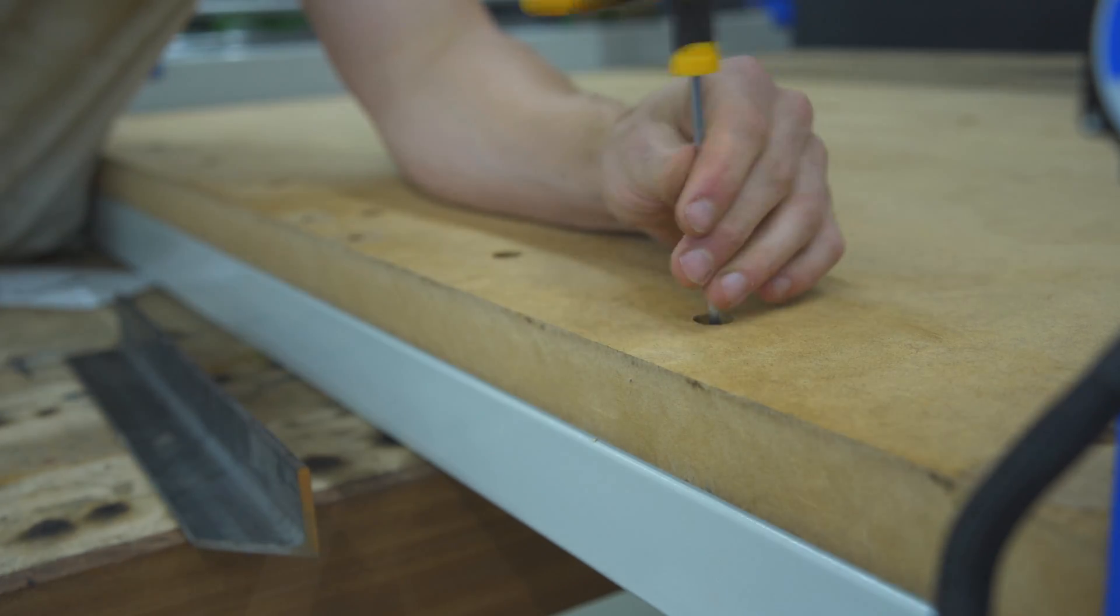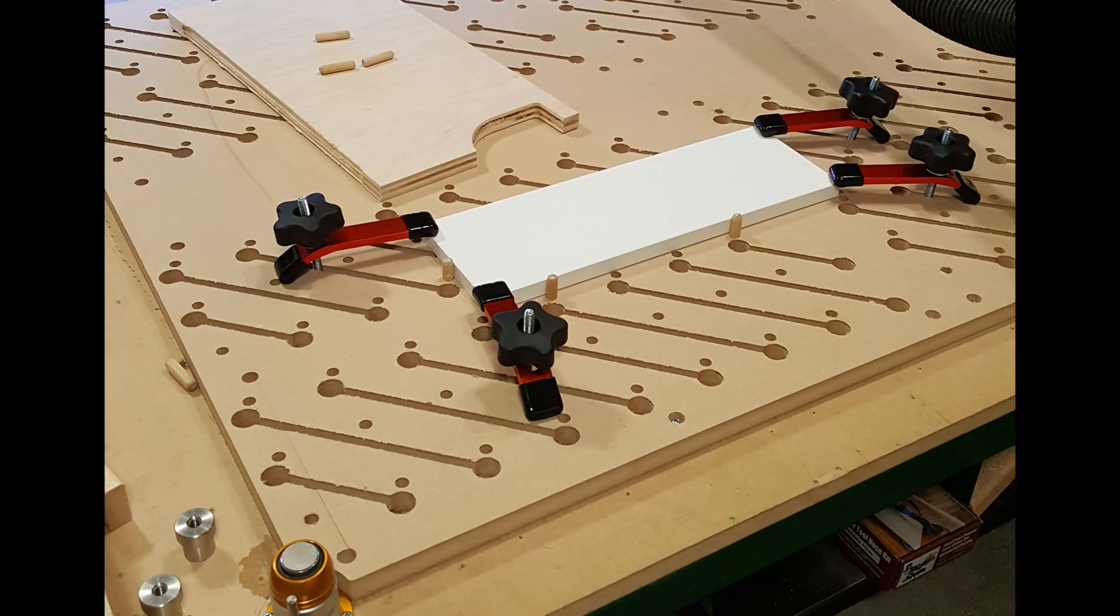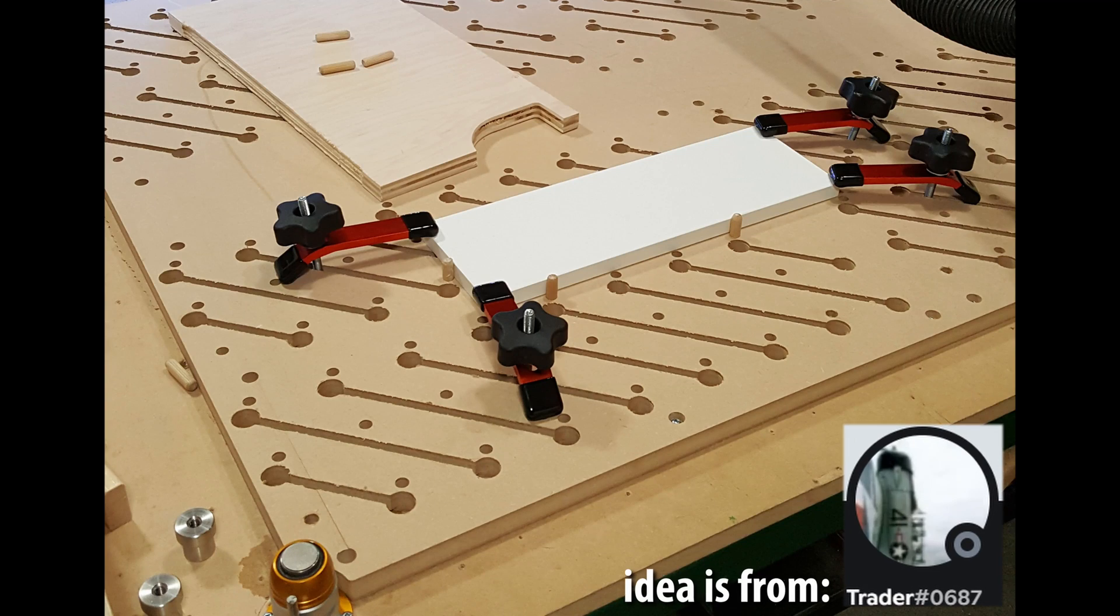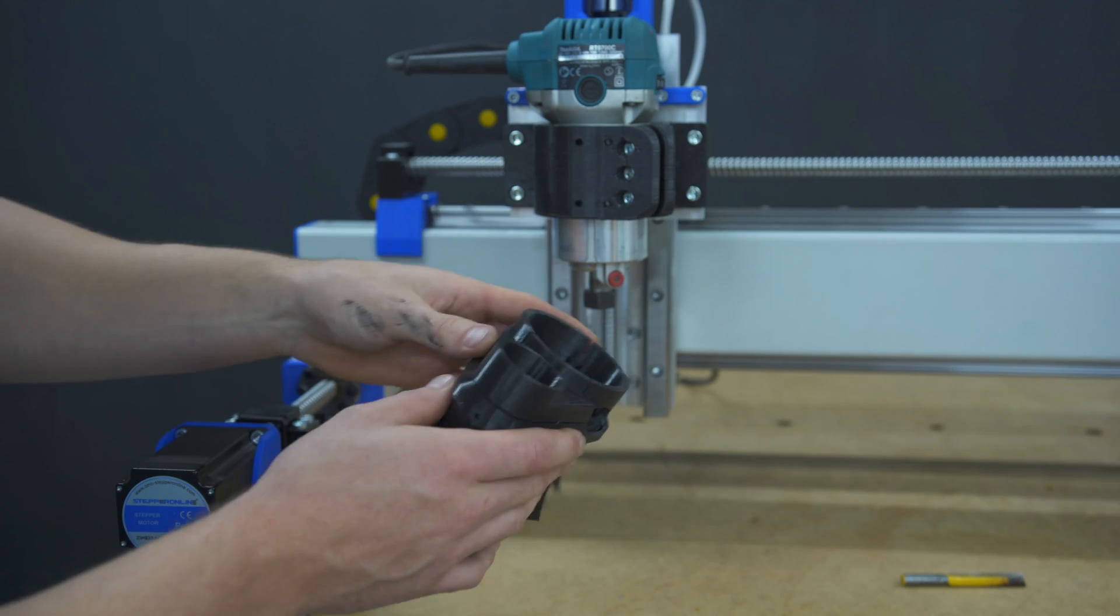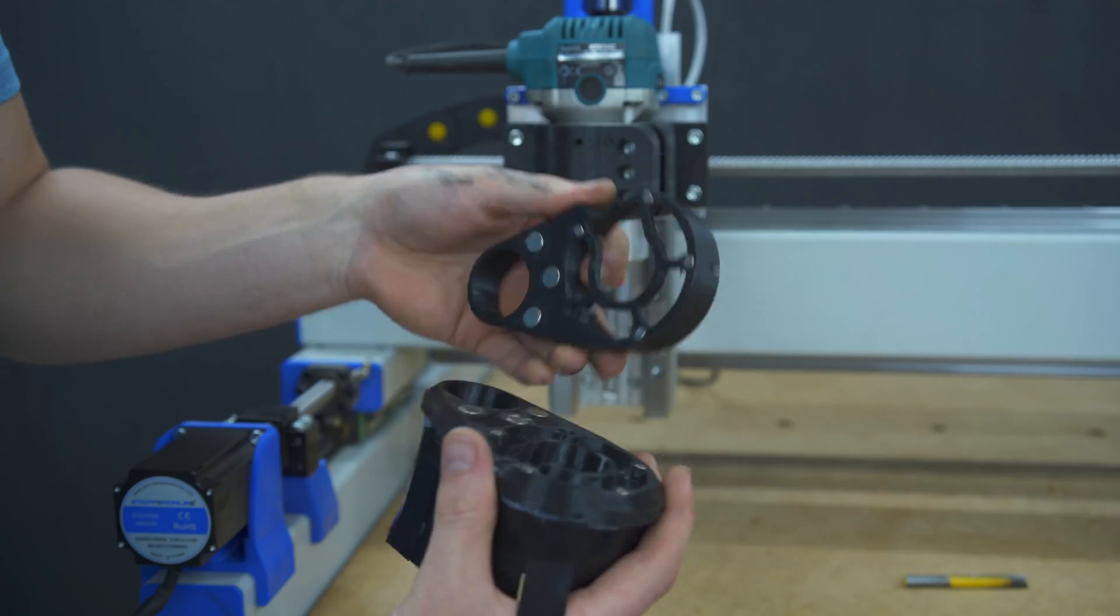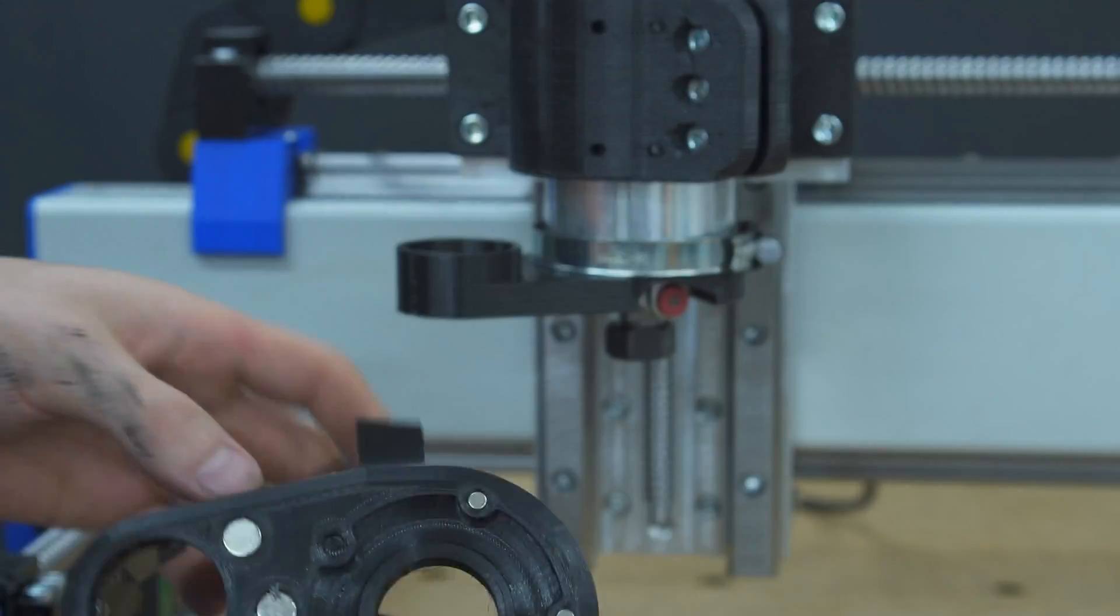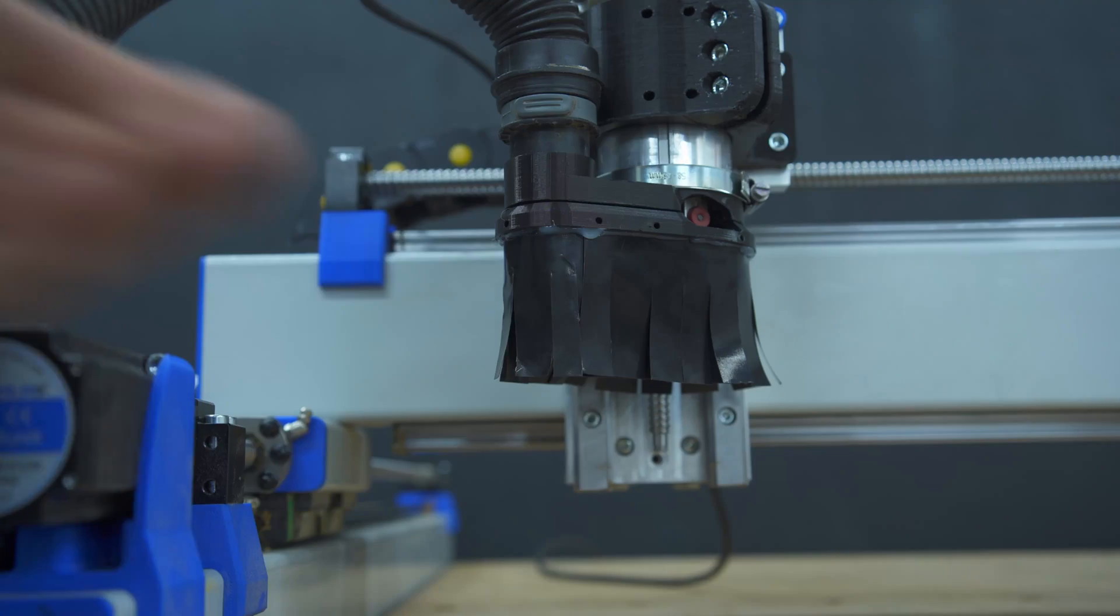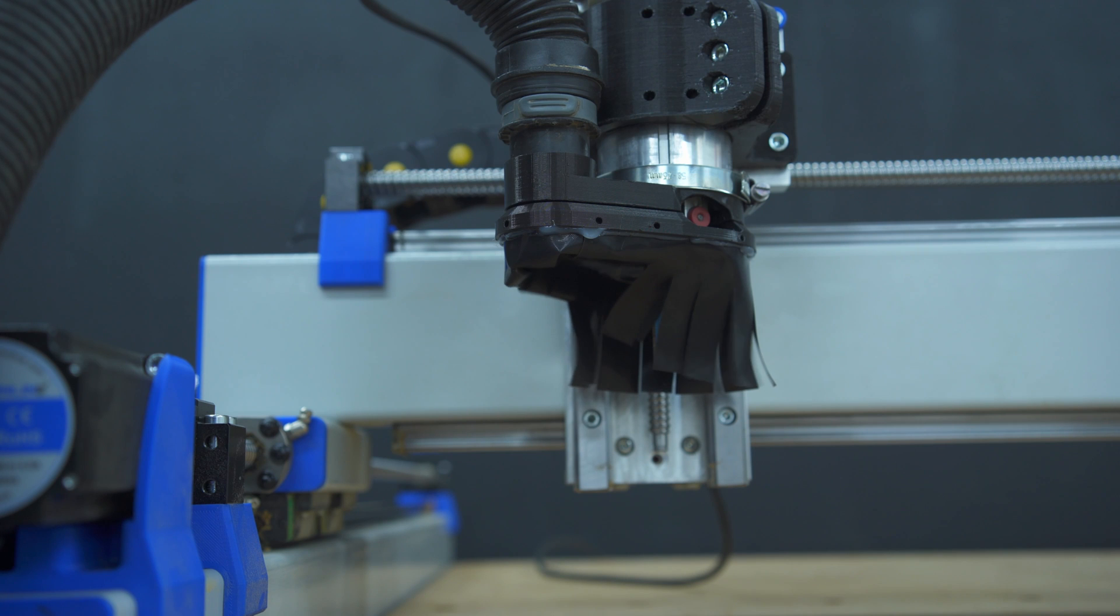For work holding I am currently just using double sided tape and screws. But in the future I think I will cut some 45 degree T-slots which should give unlimited options for work holding.